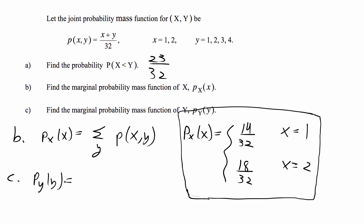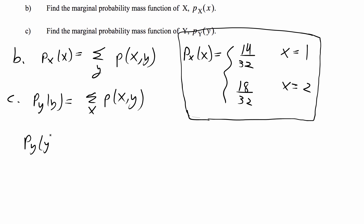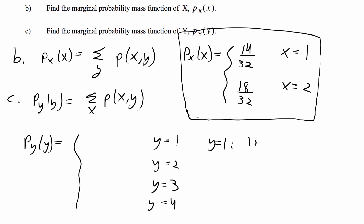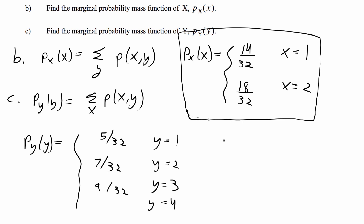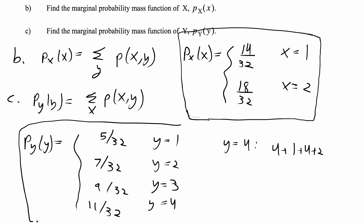For part C, Py(y) is the marginal summation over all values of x of the joint PMF. The marginal differs for each value of y. When y equals 1: (1+1) + (2+1) over 32 = 5/32. When y equals 2: (1+2) + (2+2) over 32 = 7/32. When y equals 3: (1+3) + (2+3) over 32 = 9/32. When y equals 4: (1+4) + (2+4) over 32 = 11/32. That's the answer for part C and we're done.